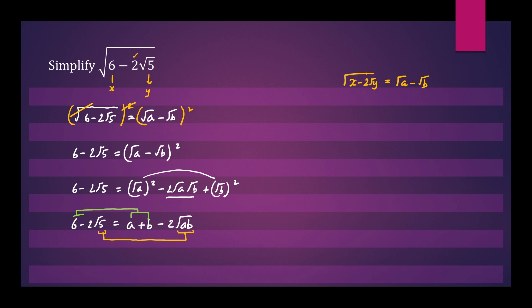So we have some simultaneous equations to solve. We have a plus b equals 6, that's equation 1, and we have ab equals 5, that's equation 2. Just by observing the two equations, we can see that a will be equal to 5 and b will be equal to 1.